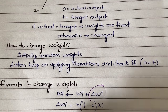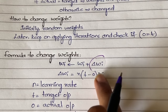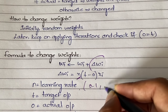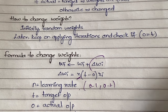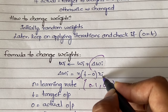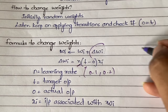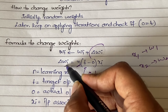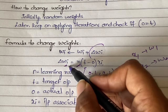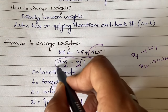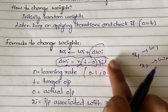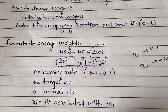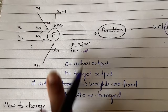The weight update formula is: wi = wi + delta_wi, where delta_wi = n * (t - o) * xi. Here n is the learning rate, usually set to a small constant like 0.1 or 0.2. t is the target output, o is the actual output, and xi is the input associated with weight wi — so x1 corresponds to w1, x2 to w2, and so on. You calculate delta_wi and add it to the existing weight.